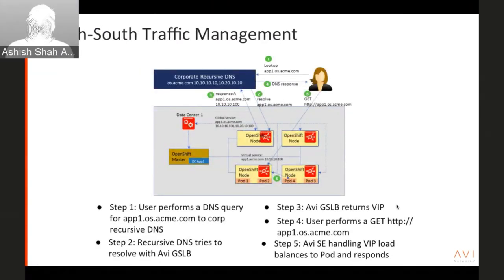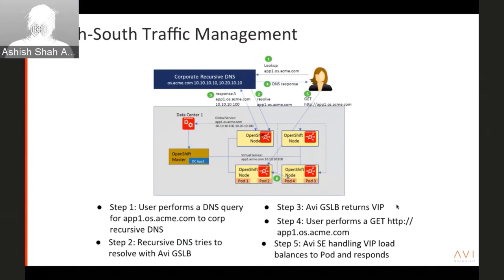Now let's look at how the traffic flow works for north-south traffic management — this is the route part. An external user looks for app1.os.acme.com. Recursively through DNS, it comes through the DNS that Avi is running. First, Avi does the GSLB resolution across two data centers. GSLB returns a local VIP, then the user performs a GET on that local IP address. Avi automatically handles that as a service engine acting as a TCP, HTTP, and SSL proxy. It figures out the right path for the specific request and performs fully stateful load balancing.